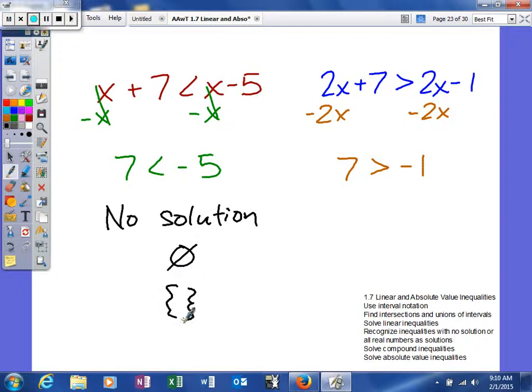As you can see, my brackets are not too good. The other one, though, is true. So you can see that 7 is greater than negative 1. So this answer would be all real numbers.